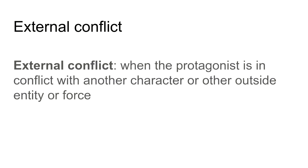When we talk about conflicts with characters in stories, we really have two types. We have the external conflict, which is usually the easier one to spot and the easier one to write about. In an external conflict, we have a protagonist that is in conflict with another character or some other external outside entity or force of some kind. And to reiterate: when we're talking about primary conflicts, these are always going to involve the protagonist — the main character.